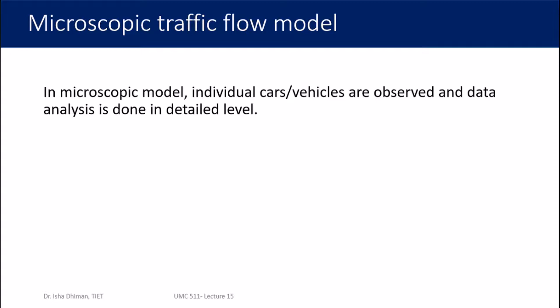From the name, 'micro' means something tiny, in very much detail — we want to understand something at the micro level, meaning a detailed analysis. In microscopic models, individual cars or vehicles are observed and data analysis is done at a detailed level. This is a clear-cut difference from macroscopic models, where we do not focus on individual vehicles but rather on the average or aggregate behavior of a large number of vehicles — their average speed, average density, and average flow rate.